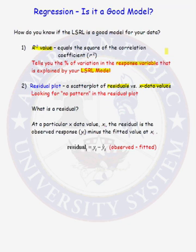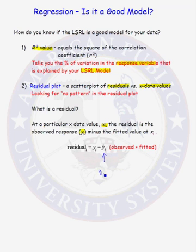What is a residual? At a particular x data value, let's say xi, the residual is the observed response — the observed data response — minus the fitted value at xi. So a residual is the observed data minus the fitted data. Recall, what is the fitted data? y-hat i is a from your regression model plus b from your regression model evaluated at your ith data value.